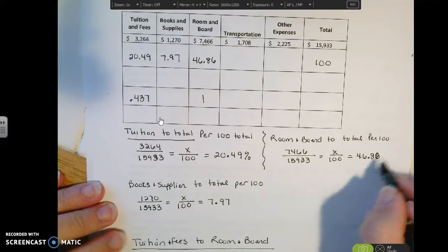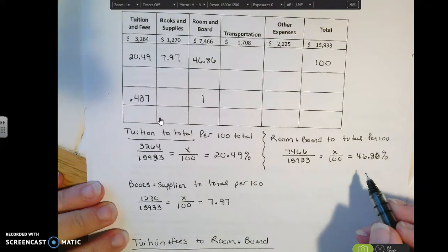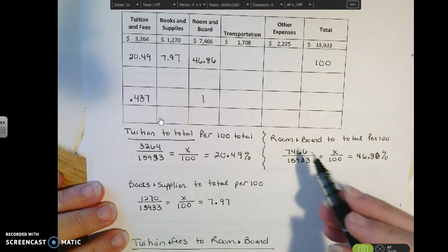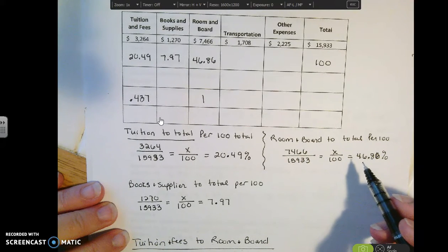So I find out that 46.86% of my total cost is going to go to room and board. You can also look at this as $46 for every 100 is going to go to room and board.